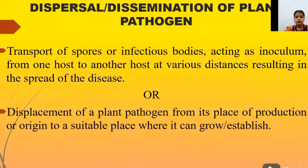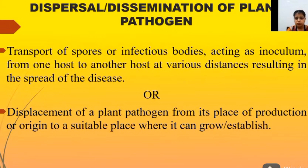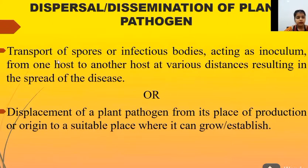Next is the dispersal and dissemination of plant pathogens — how they spread and transport. Dispersal and dissemination are the same terms meaning transportation or spreading. The definition is: the transport of spores or infective bodies as active inoculum from one host to another at various distances, resulting in the spread of disease. Another definition is: displacement of plant pathogen from its place of production to a suitable place where it can grow or establish.